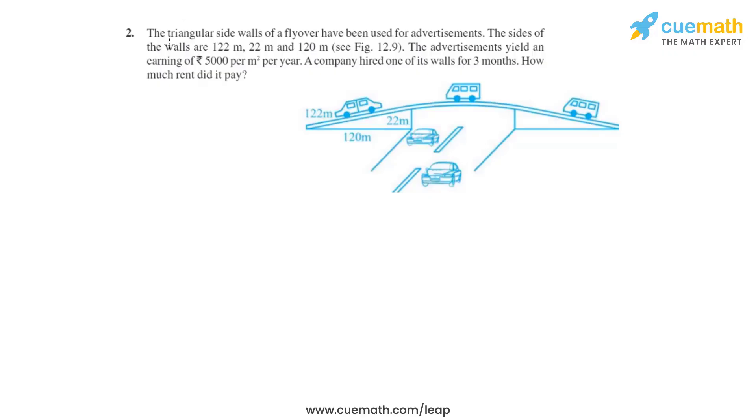Question number two of this exercise says that the triangular side walls of a flyover have been used for advertisements. The sides of the walls are 122 meters, 22 meters, and 120 meters. The advertisements yield an earning of rupees 5000 per meter square per year. A company had hired one of its walls for three months, and we need to calculate how much rent did it pay.